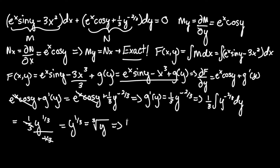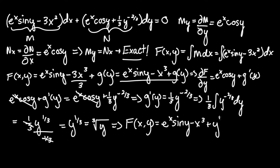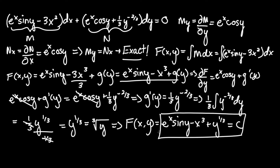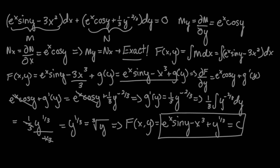Now that we have g of y, we are at our answer. The parent function F(x, y) equals e to the x sine y minus x cubed plus y to the one-third. Since this is not an initial value problem and we are not given an exact point, this equals C. So the general solution is: e to the x sine y minus x cubed plus y to the one-third equals C. I hope this made it a little more clear. If you have any questions, please leave them in the comments below, and good luck.